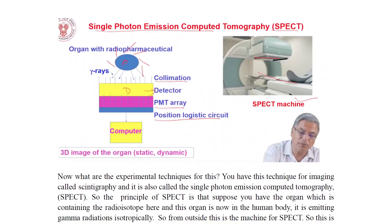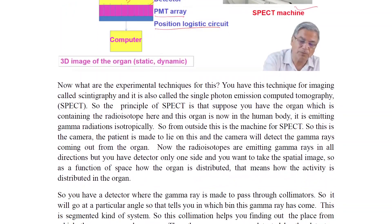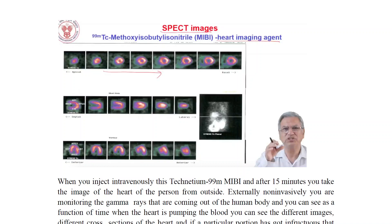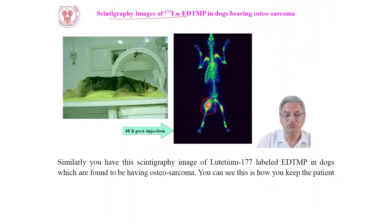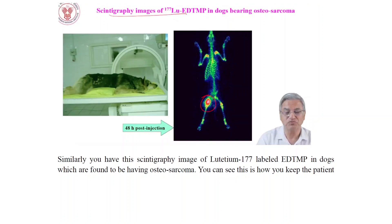Single Photon Emission Computed Tomography (SPECT) uses an organ loaded with radiopharmaceutical, a collimated detector, PMT array, position logic circuit, giving a 3D image of the organ in static or dynamic mode. Example SPECT images include 99mTc-MIBI — methoxy isobutyl isonitrile — as a heart attack imaging agent. Scintigraphy example: 177Lu-EDTMP in dogs bearing osteosarcoma, imaged 48 hours post-injection.